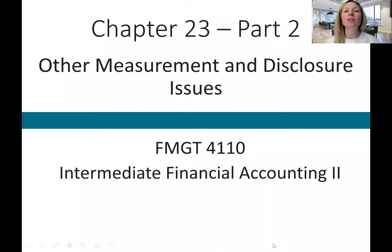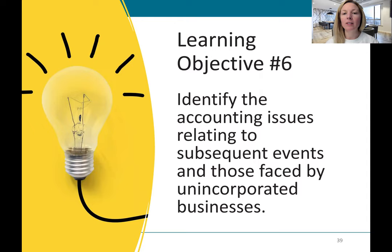Welcome back to Chapter 23, Part 2, where we'll conclude our lecture for other measurement and disclosure issues. Our sixth learning objective is to identify the accounting issues related to subsequent events and those faced by unincorporated businesses.